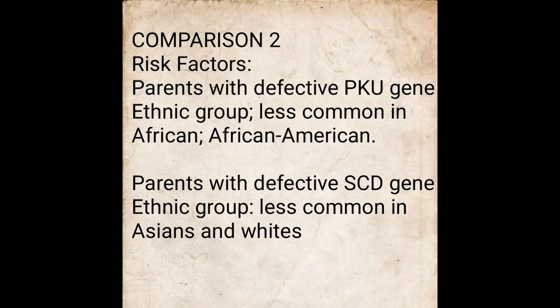Comparison two: the risk factors. Parents with the defective PKU gene are usually of white ethnic extraction; it is less common in Africans and African-Americans. Whereas the SCD defective gene is a problem of African-Americans, some Asian and Hispanic Americans — you do not find it in whites.